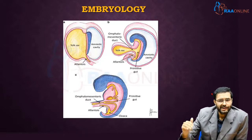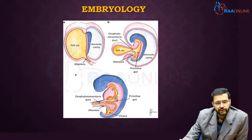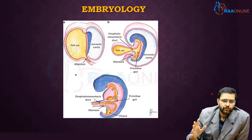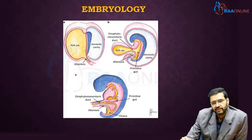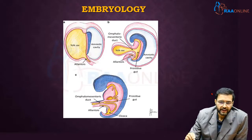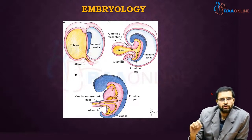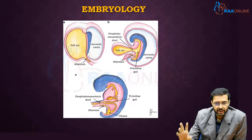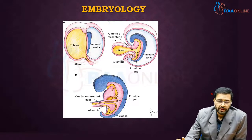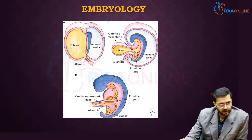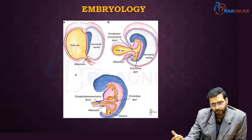Moving on to embryology — I'll take you to the early phases of human embryo development. The human embryo has a yolk sac and an amniotic cavity, and by around the 4th to 7th week of gestation, the developing midgut communicates with the yolk sac by means of a small stalk or duct called the vitelline duct or the omphalomesenteric duct. By around the 8th week, this duct should obliterate, because subsequently the placenta takes over the function of providing nutrition to the growing embryo.